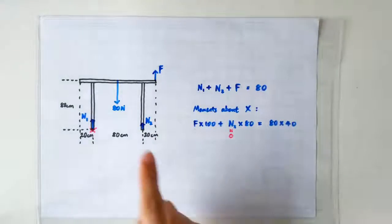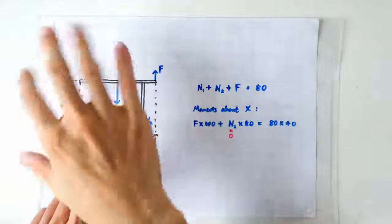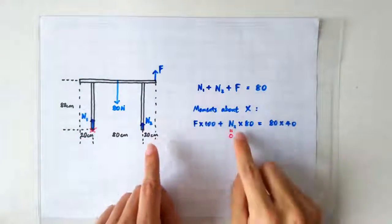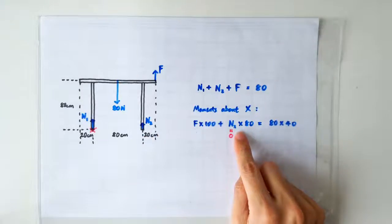Aha! The moment when the table is just about to rotate must be when the normal contact force on the right leg N2 has just dropped to zero.